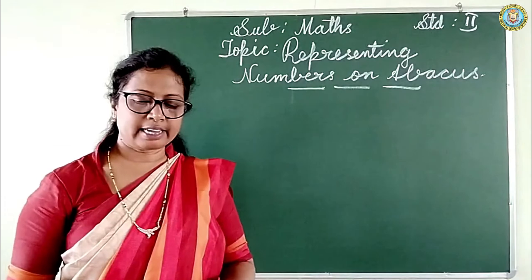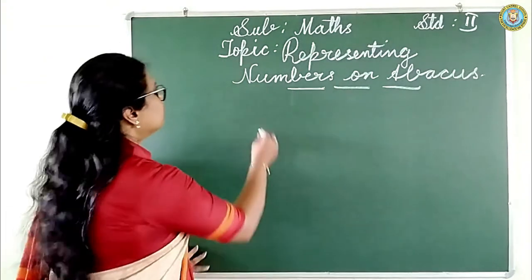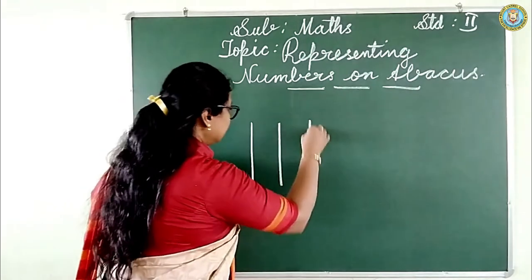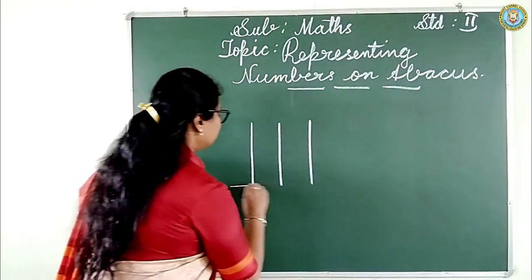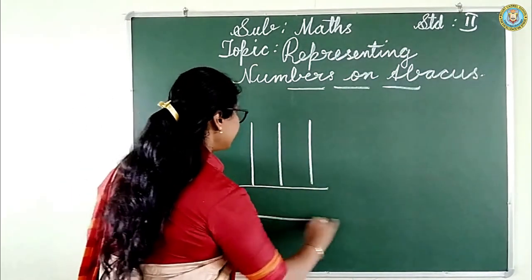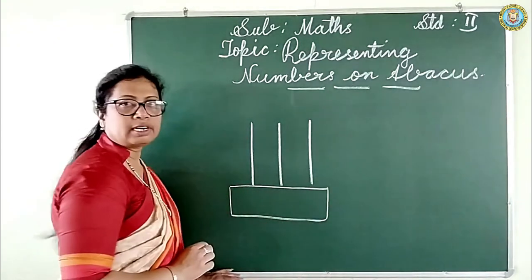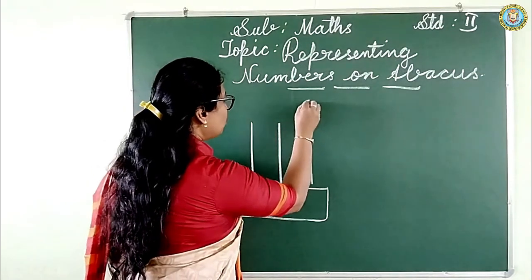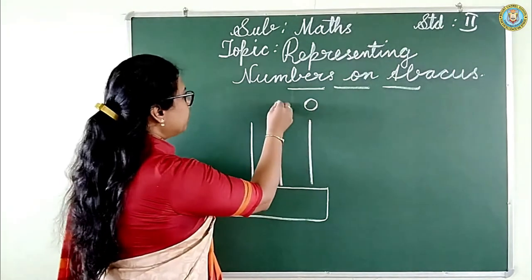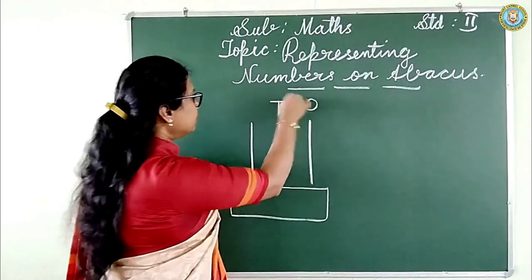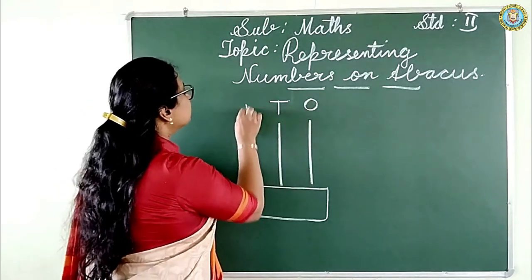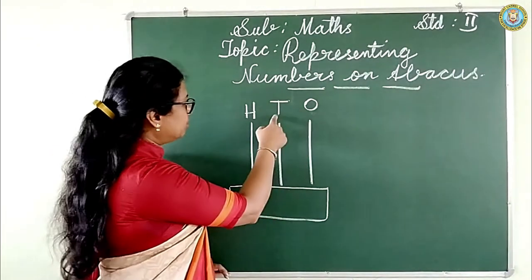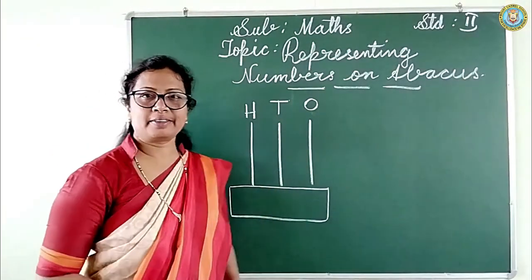See children, here there are three spikes — one, two, three. From the right we assign the place value. Always from the right: the first place is called ones, the second is called tens, and the third place is called hundreds.